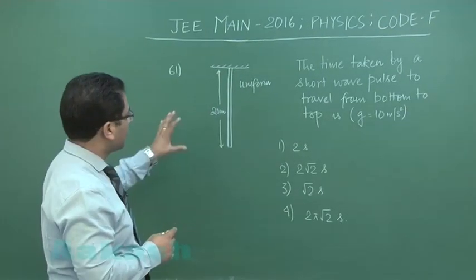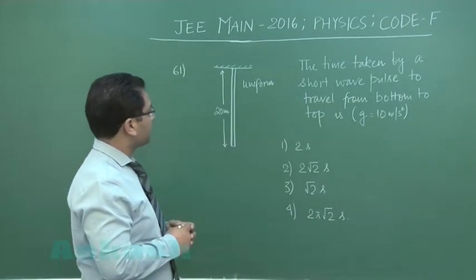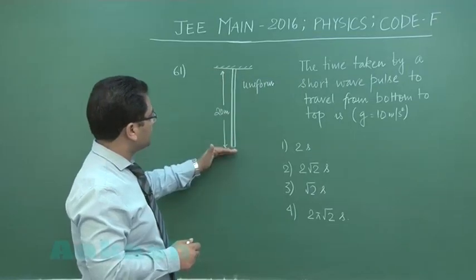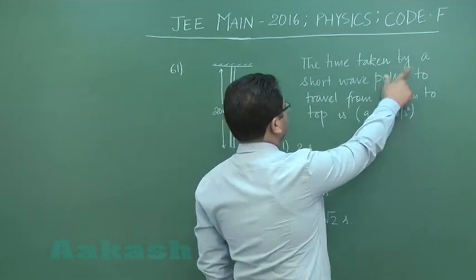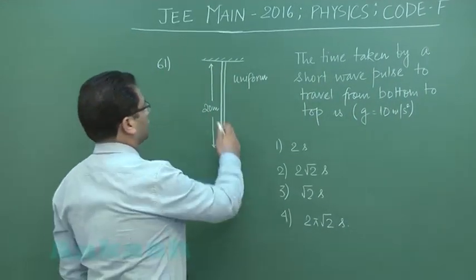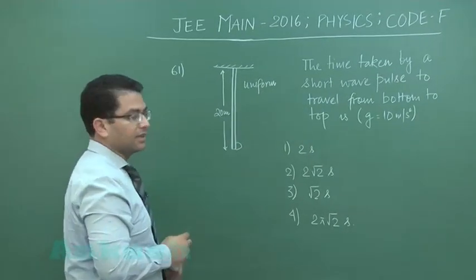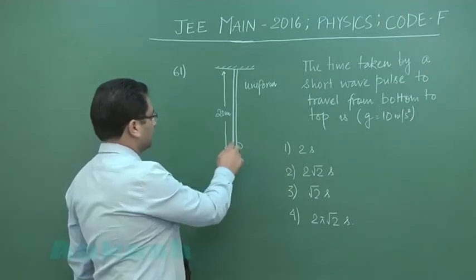The first question that I have is from the topic of waves. There is a uniform string with length 20 meters, and it says the time taken by a short wave pulse to travel from bottom to top. That means a small wave is created here and we are supposed to calculate the time taken by this particular pulse to travel from bottom to top.